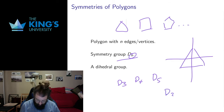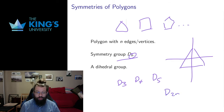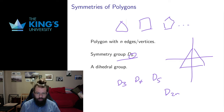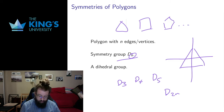Some sources will call this D2n, for reasons we'll see shortly. There's not necessarily consistent notation, but I prefer for this course to refer to them just by the number of vertices.